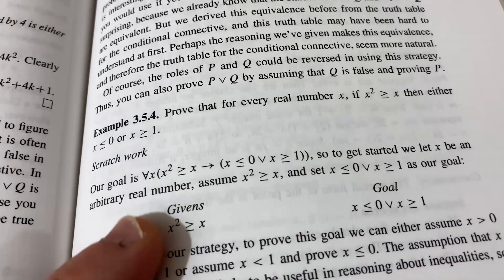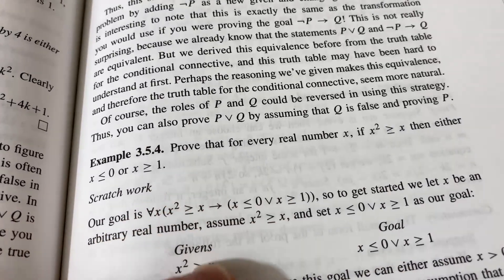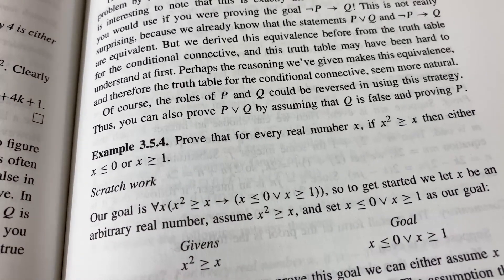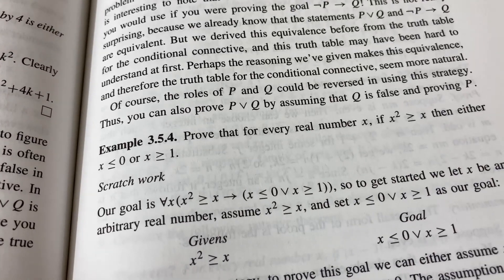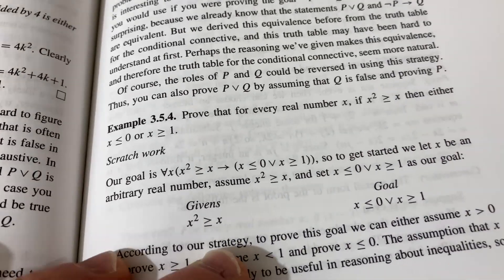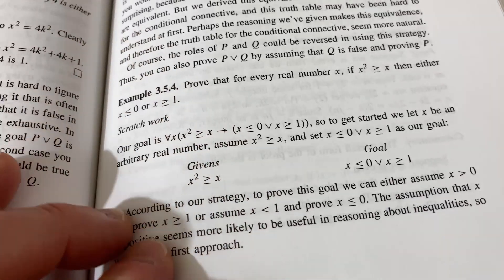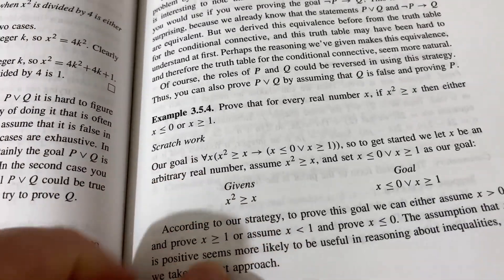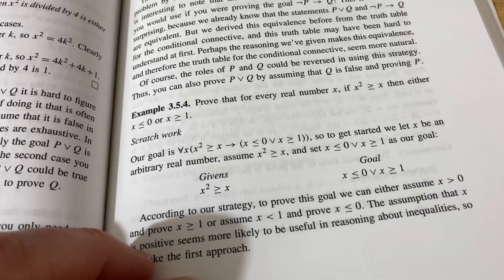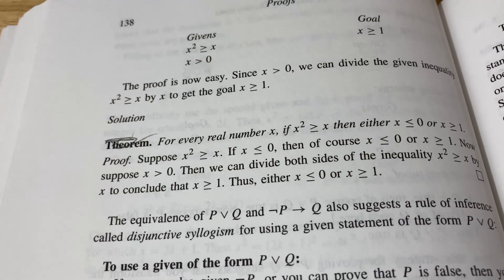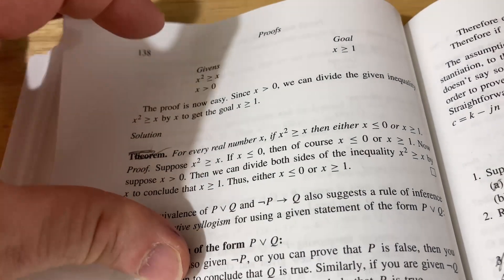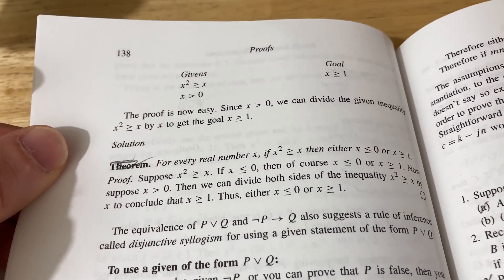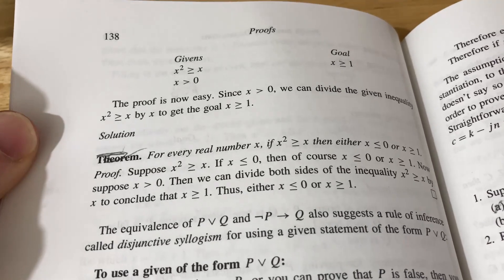Here's an example of a proof that I worked through. It says, prove that for every real number x, if x² ≥ x, then either x ≤ 0 or x ≥ 1. And what I like about this book is that he breaks down the scratch work. And that's exactly what I call it when I'm working out proofs, which I think is super cool. Then here he states it as a theorem and goes through the proof after going through the scratch work. So he actually shows you how to figure out the proofs, and he does it in incredible detail.